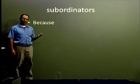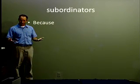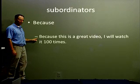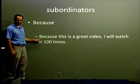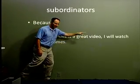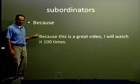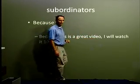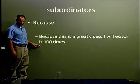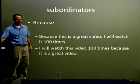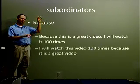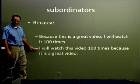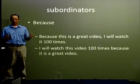A couple of other subordinators: the first one that is not a time subordinator is 'because.' For example: 'Because this is a great video, I will watch it a hundred times.' Here 'because' is the subordinator at the beginning, which makes this first part my dependent clause — and the dependent clause is first, so after 'video' we put a comma, and then the independent clause: 'I will watch it one hundred times.'